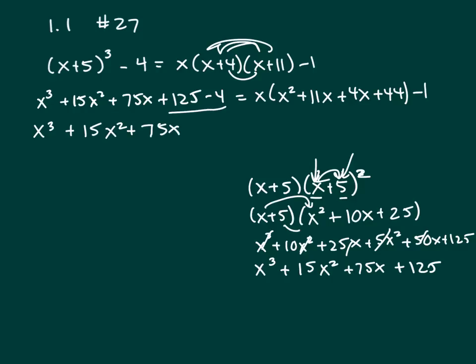So just bring that down as it is. We can combine those plus 121. And then we've got x times x squared plus 15x plus 44 minus 1.